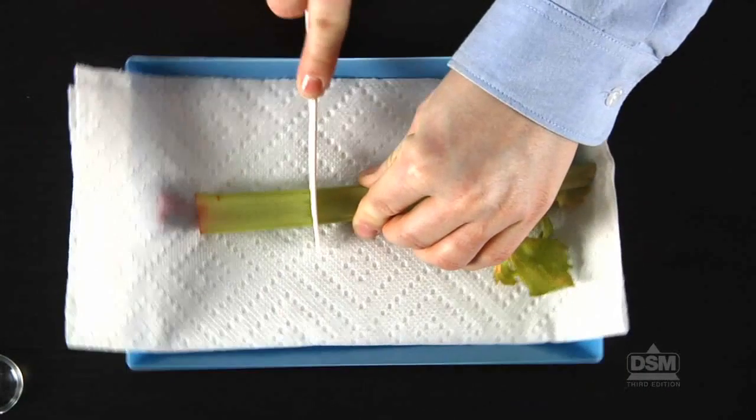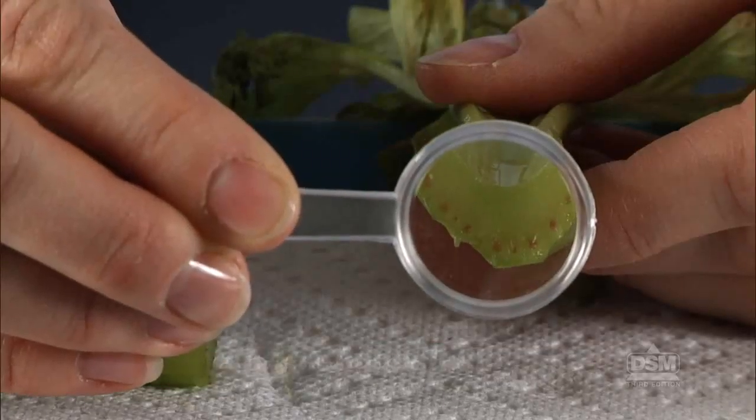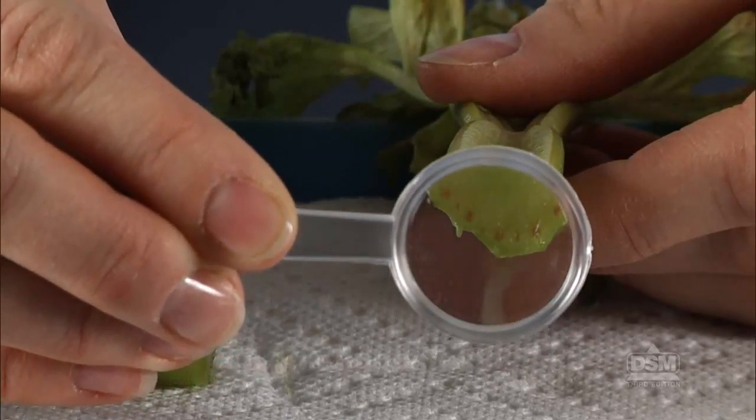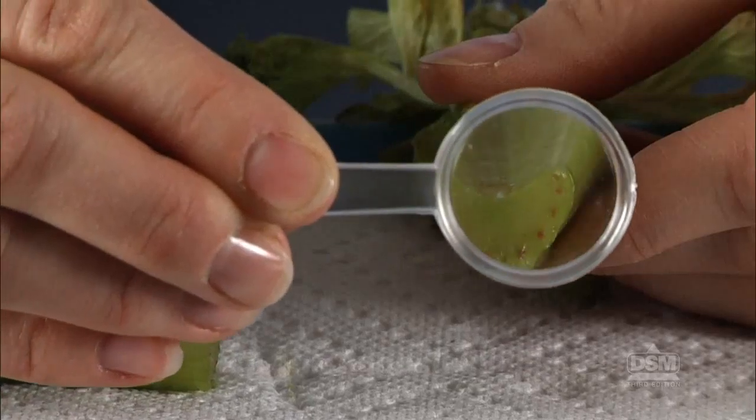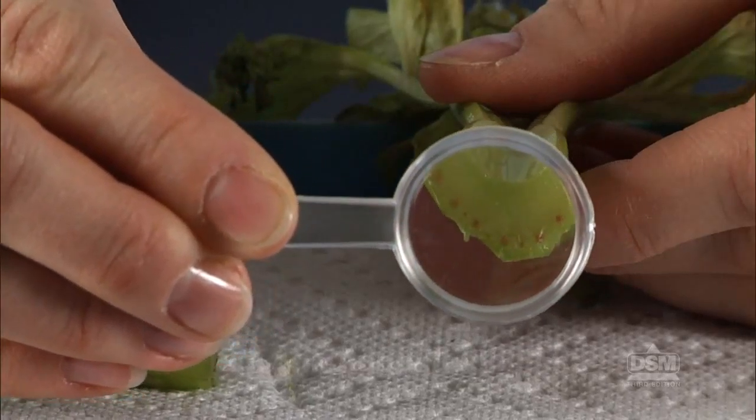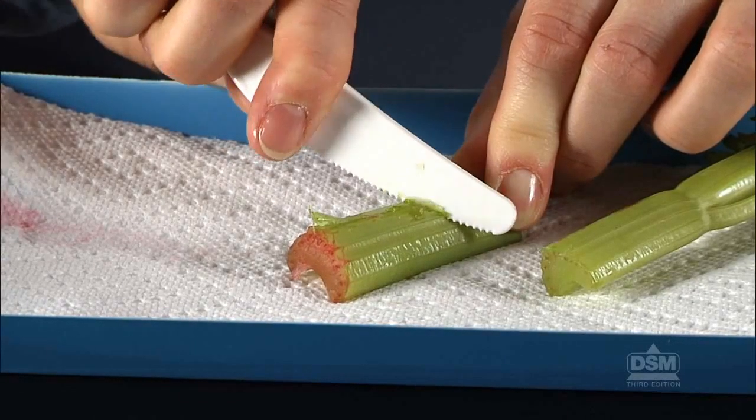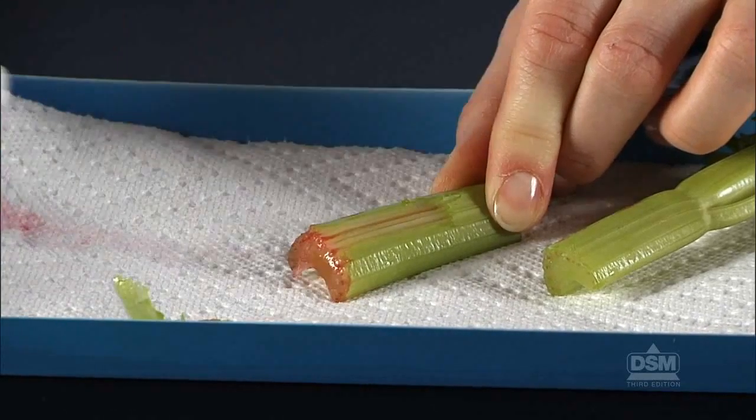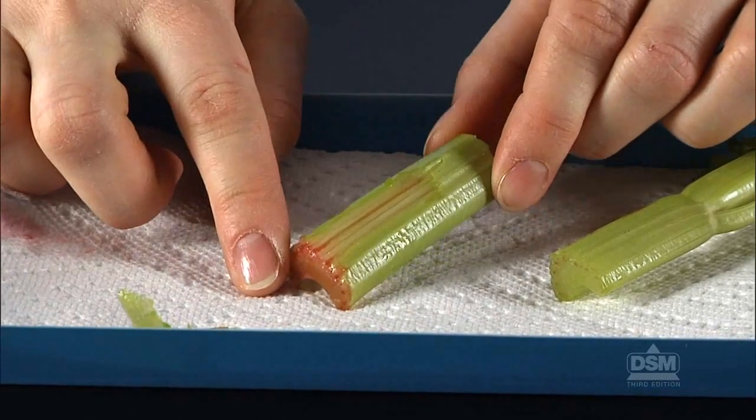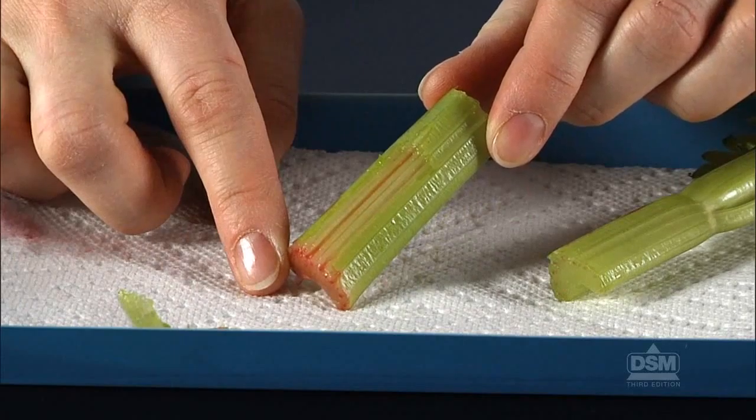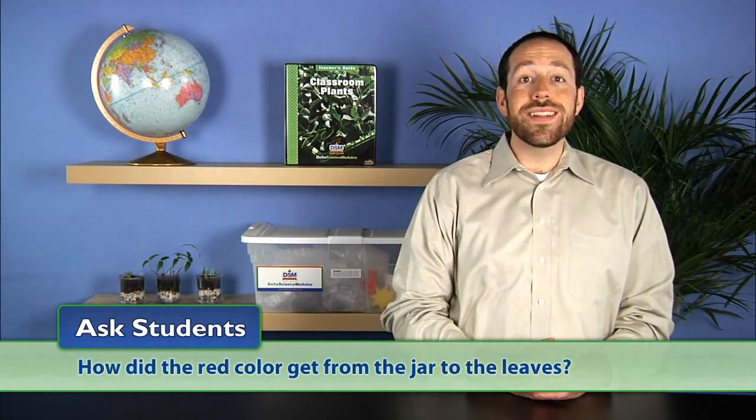Have them cut the celery stalk in half and examine the cross section with a magnifier. They should notice little red dots at the end of a tube or stringy part. Instruct students to scrape the stalk with a knife and describe what they see. They should identify long, thin lines of red running the length of the stalk. Then ask, how did the red color get from the jar to the leaves? Students should respond that the color passed through the tubes in the stem.